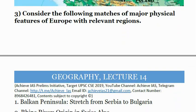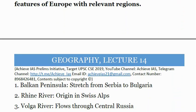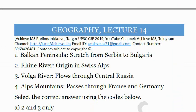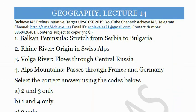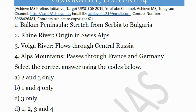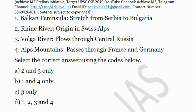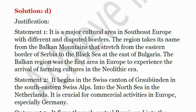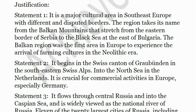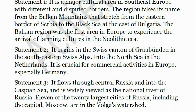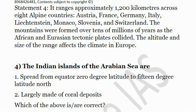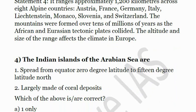The third question: consider the following matches of major physical features of Europe. First, Balkan Peninsula — stretches from Serbia to Bulgaria. Second, Rhine River — originates in the Swiss Alps. Third, Volga River — flows through Central Russia. Fourth, Alps Mountains — pass through France and Germany. The correct answer is D, that is all are correctly matched. This is basically map work; if you observe the maps carefully you will be able to answer this question. These are facts which you have to learn and observe on maps carefully.